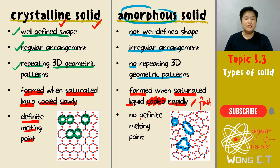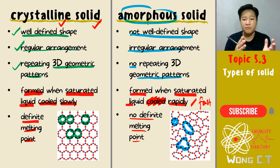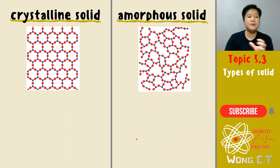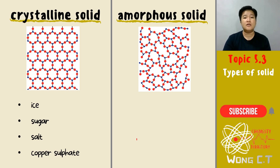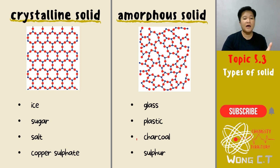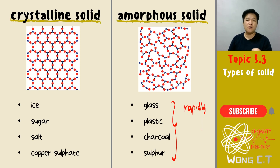Because of that irregular arrangement and not-well-defined shape, you will have no definite melting point — the melting point may change depending on the type of solid. Examples of crystalline solid: ice, sugar, salt, copper sulfate, crystal. Examples of amorphous solid: glass, plastic, charcoal — all produced very rapidly, meaning the saturated liquid cooled down very fast.